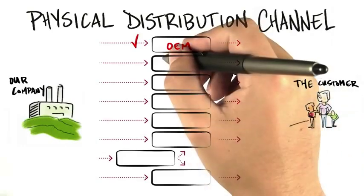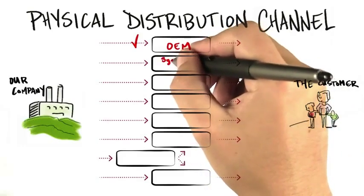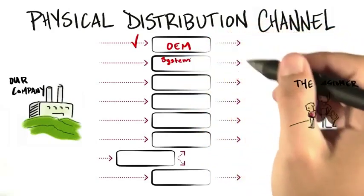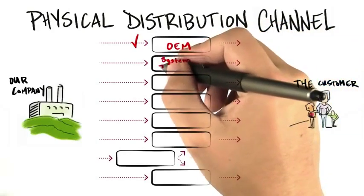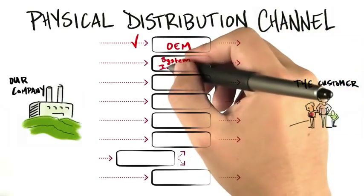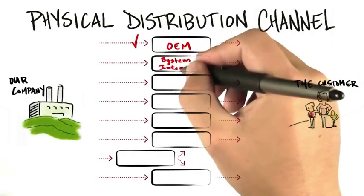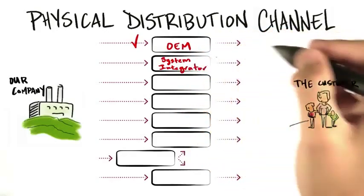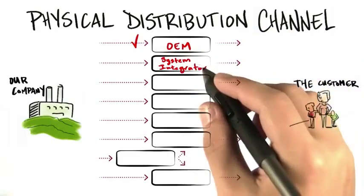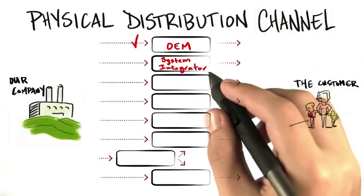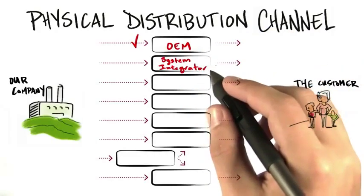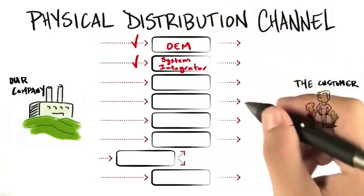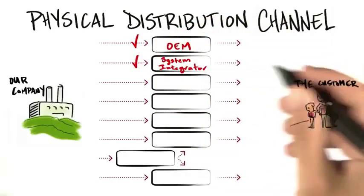So for a system integrator, you might be selling to a company — let's say you're Cisco — but you're selling to somebody who's building an entire telephone switching network. This system integrator would take your component, your switches and routers, and actually build out a system that includes devices from other companies. They add value-added software and additional hardware and create an entire system for an end user.